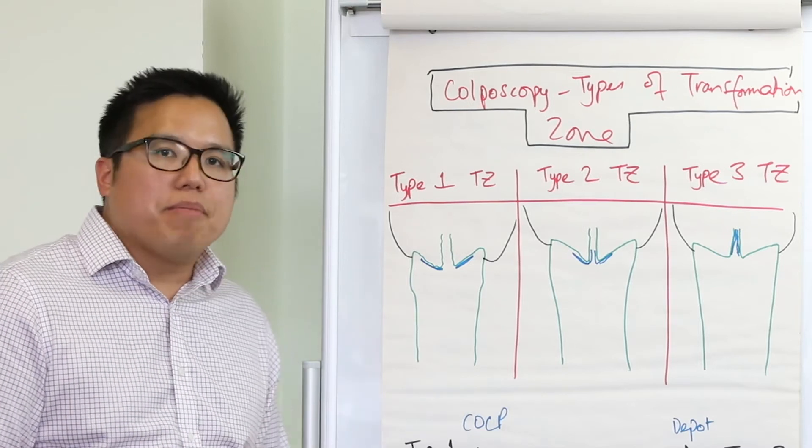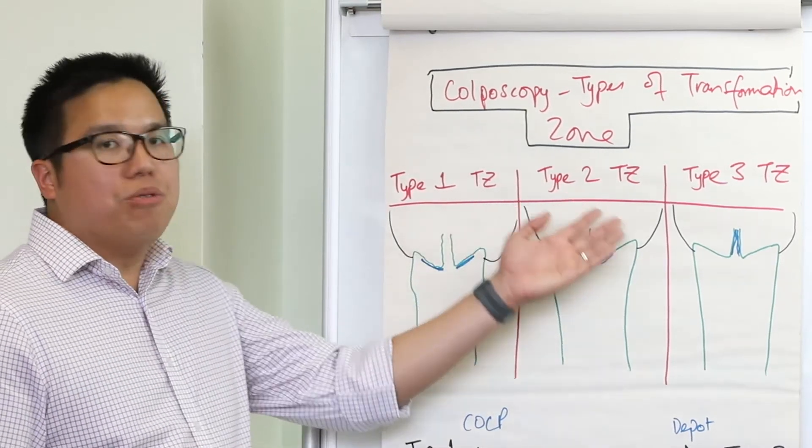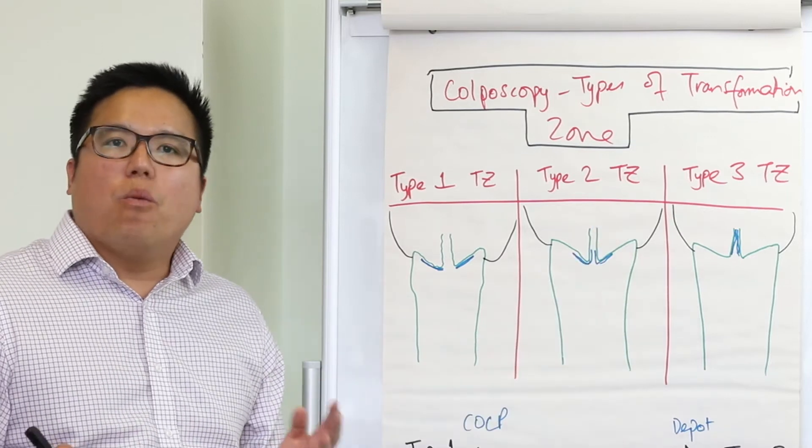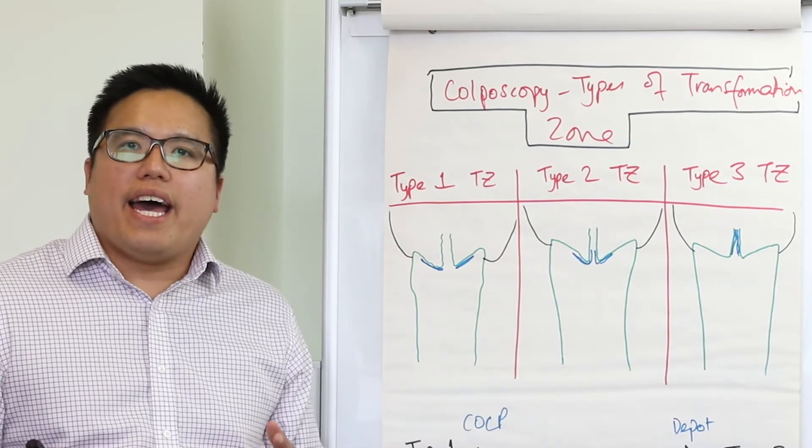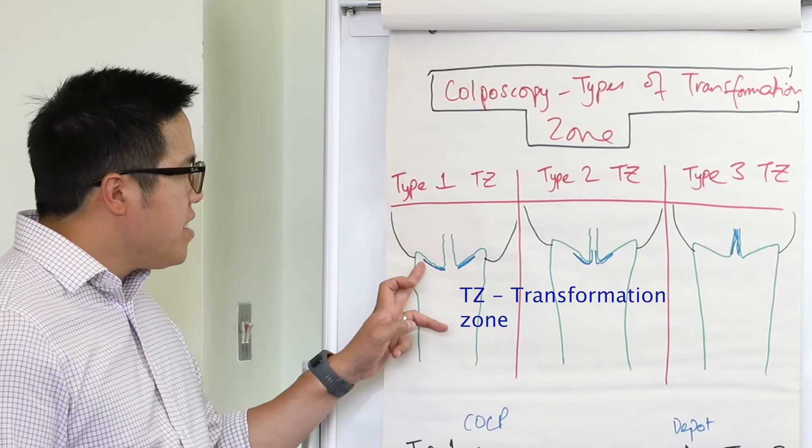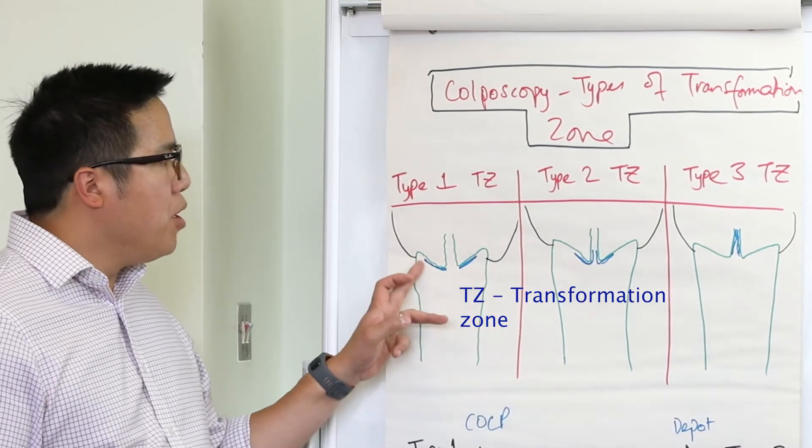So the transformation zone can be type 1, type 2, or type 3. A type 1 transformation zone is where the TZ is on the ectocervix, as you can see here in the blue pen.